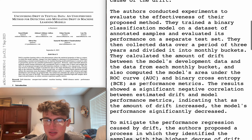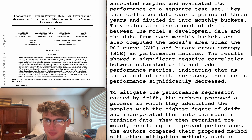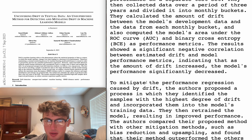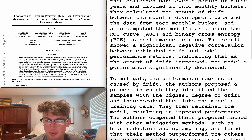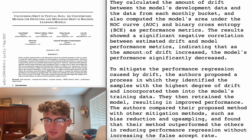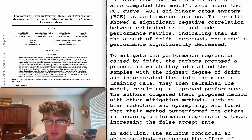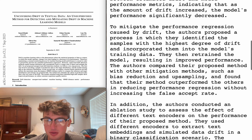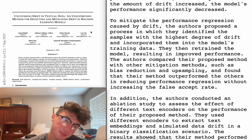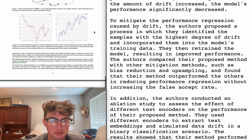Experiments to evaluate effectiveness. Binary classification model they trained. Period of years divided into monthly buckets. Calculate the amount of drift between the model's development data and the data from each monthly bucket. So I think the production data, test data, is just newer stuff. Significant negative correlation between estimated drift and model performance metrics - as drift increased, the model's performance significantly decreased. This is kind of whatever, not for me. I'm sure it's useful in theory for training, but whatever.